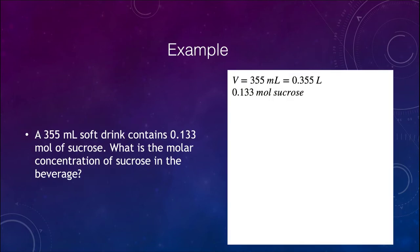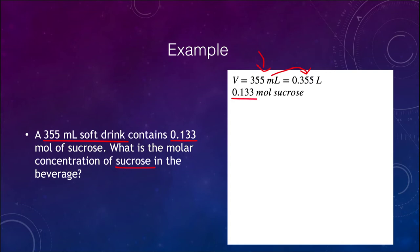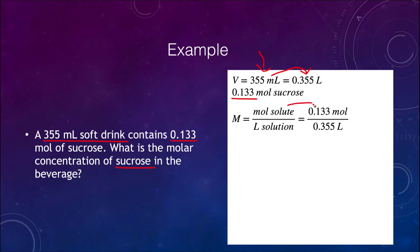Let's start with a 355 milliliter soft drink that contains 0.133 moles of sucrose. What is the molar concentration of sucrose in the beverage? We know the volume is 355 milliliters, which we convert to 0.355 liters. The molarity is simply the moles of solute — 0.133 — divided by the liters of solution. We find that the molarity is 0.375 moles per liter of solution.